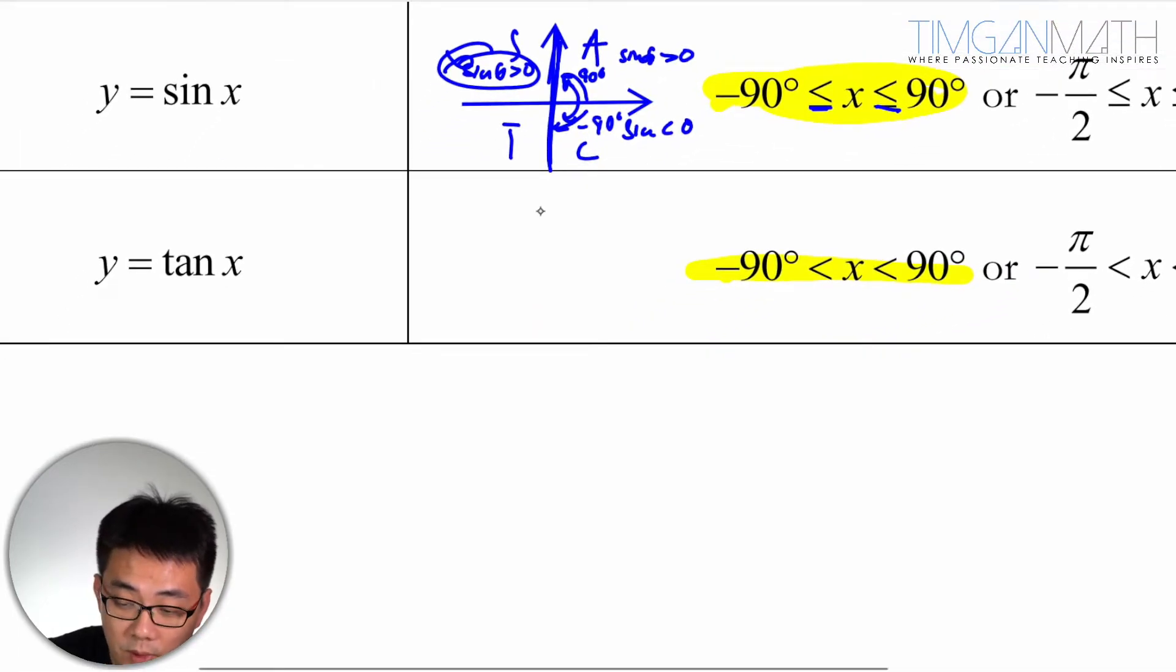Then same thing with tangent. But the problem with tangent is you can't tangent 90 degrees or negative 90. You can't have the, what they call it, define the gradient of the vertical line because it is undefined. So in other words, we cannot equate to the 90 degrees here. So just take note of that.